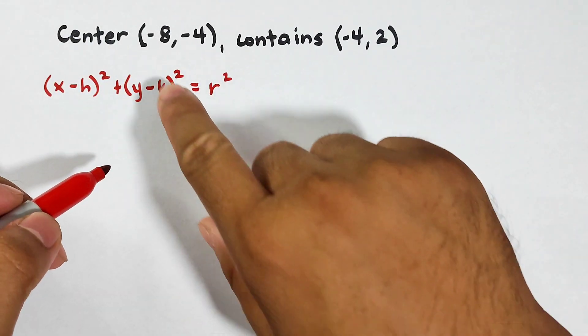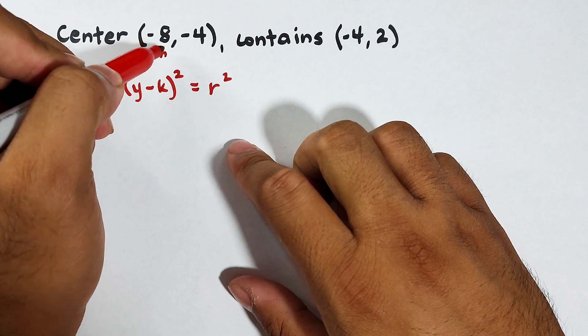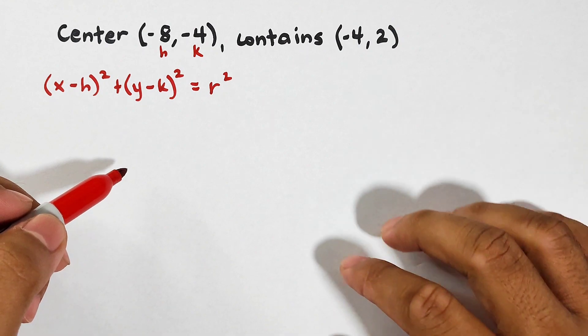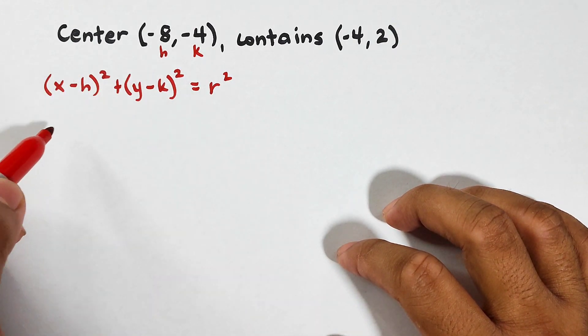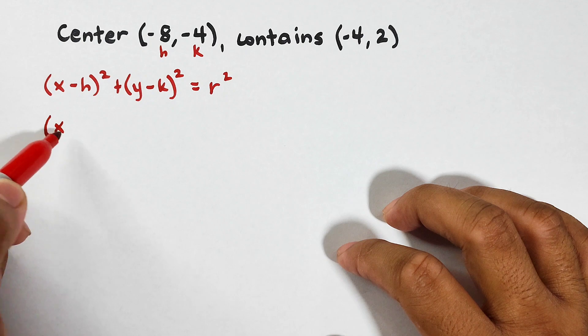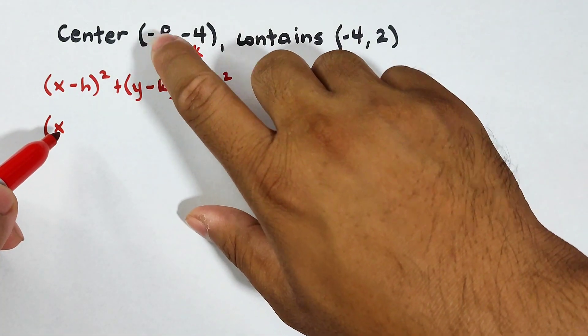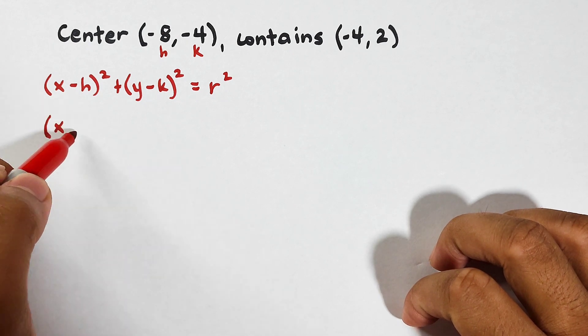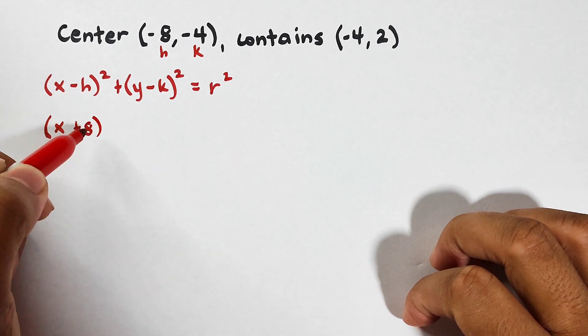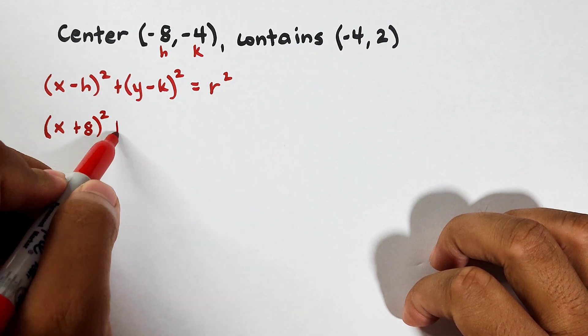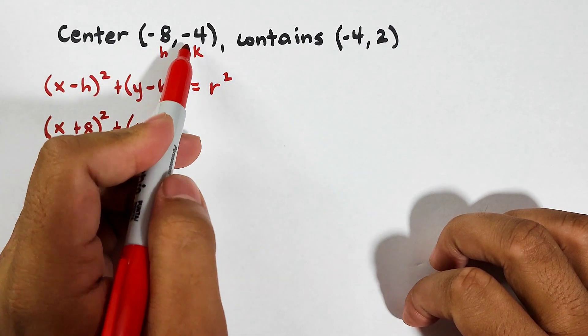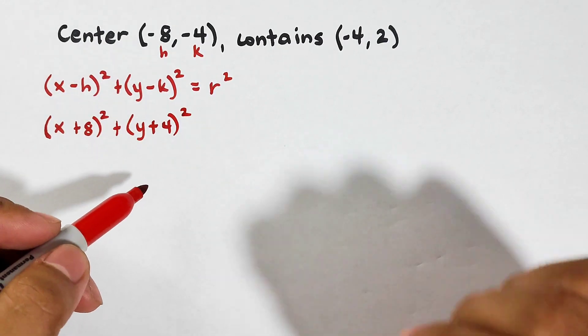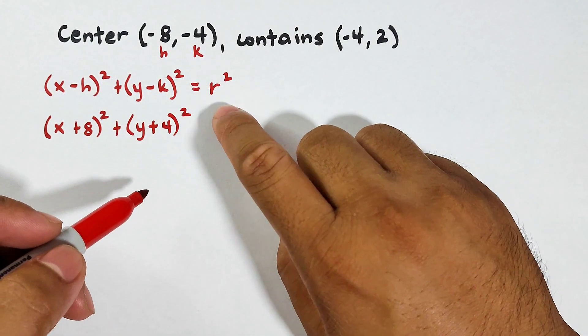x minus h squared plus y minus k squared is equal to r squared. As you can see, we have h because this is h, we have k here too. But we don't have anything to substitute for r. Later on, I'll explain how we'll find it. So let's substitute our h. I told you earlier, additive inverse. This is negative 8. The additive inverse of negative 8 is plus 8 or positive 8. So that is plus 8 raised to the second power. And then plus y. This is negative 4. This must be plus 4 raised to the second power. Now, here's the thing. We don't have r yet.